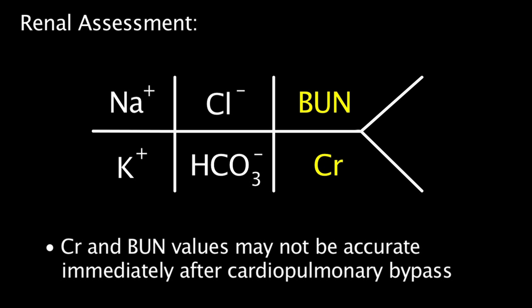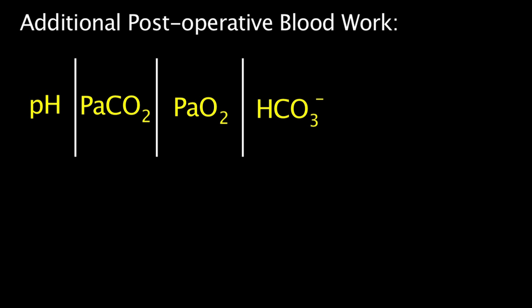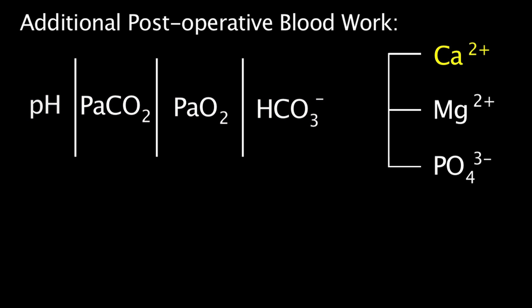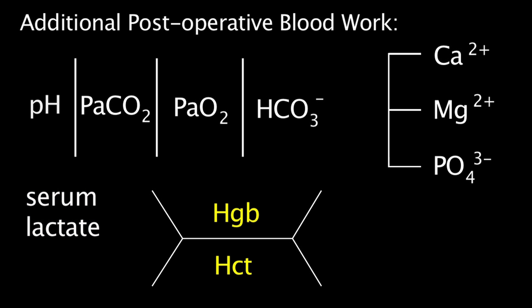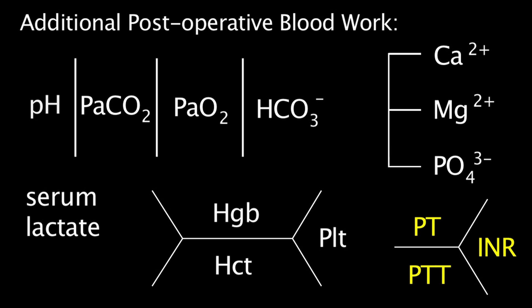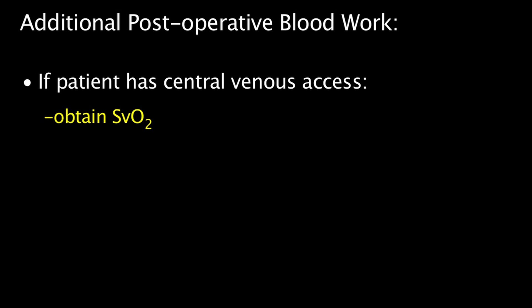In addition to serum electrolytes, initial blood work after cardiac surgery should include an arterial blood gas analysis, ionized calcium, serum lactate, hematocrit and hemoglobin, platelet count, and coagulation studies if the patient has had a cardiopulmonary bypass run. If the patient has central venous access, such as an internal jugular central venous line, then a mixed venous oxygen saturation should be obtained.